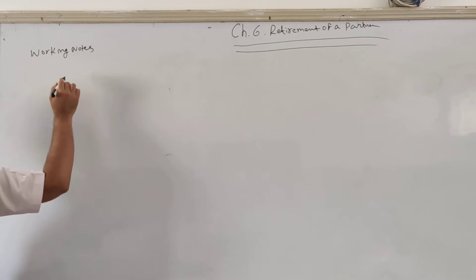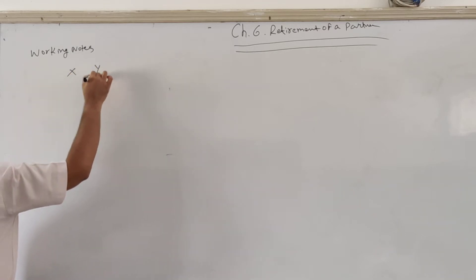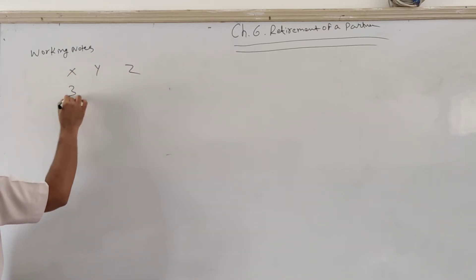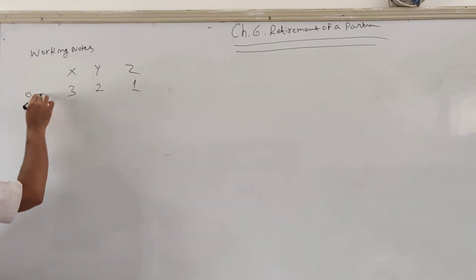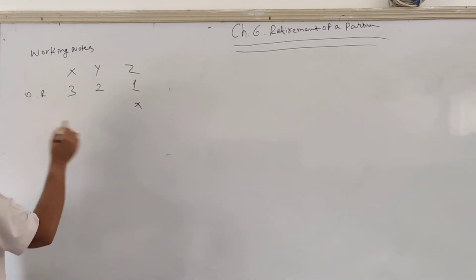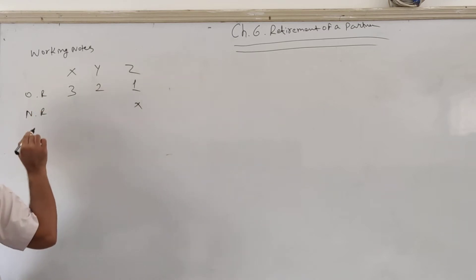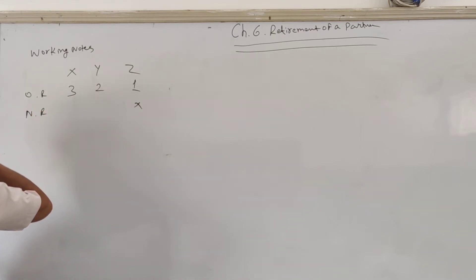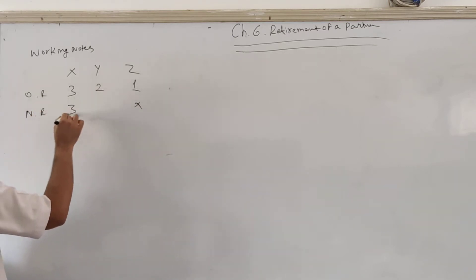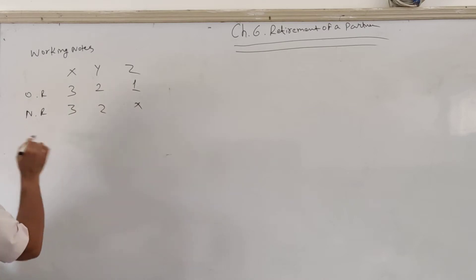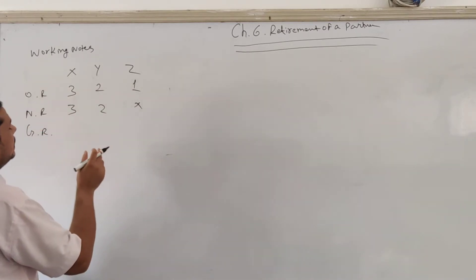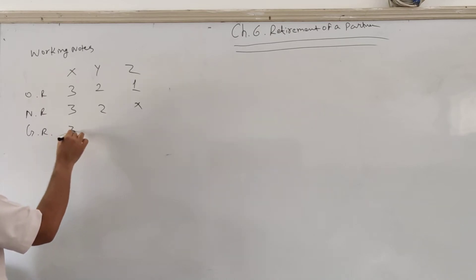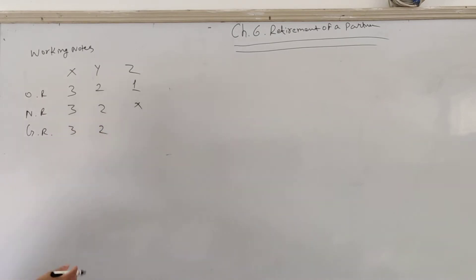There are three partners: X, Y, and Z in the ratio 3:2:1 — that is the old ratio. Z is retiring. The new ratio is not given, so as discussed at the start of the chapter, if no information is given, the new ratio will be the same as the gaining ratio. So the gaining ratio will remain the same.